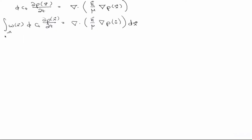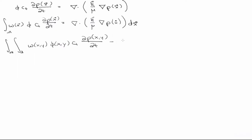Therefore, our volume integral of the domain can be split into the domain over the depth of the reservoir. Our w becomes a function of x and y. Phi is also a function of x and y, and potentially ct is two — though we're not going to consider that case. This p is a function of x and y.